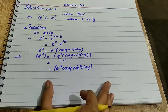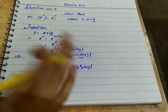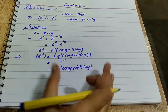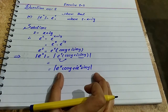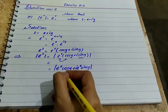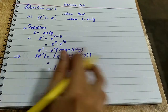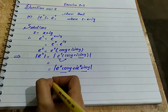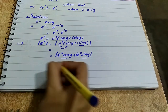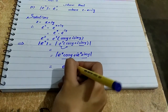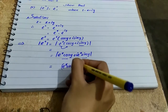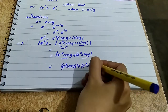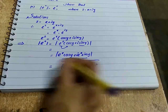Now we simplify further. We apply the modulus formula from the complex numbers chapter learned in a previous lecture: the modulus equals the square root of the real part squared plus the imaginary part squared. Applying this formula, we get the square root of (e^x·cos y)² + (e^x·sin y)².